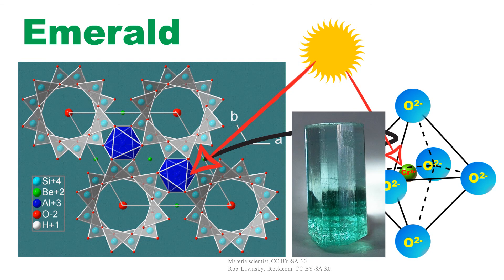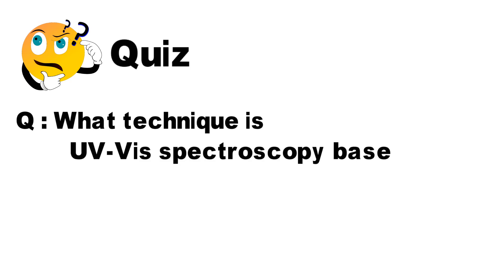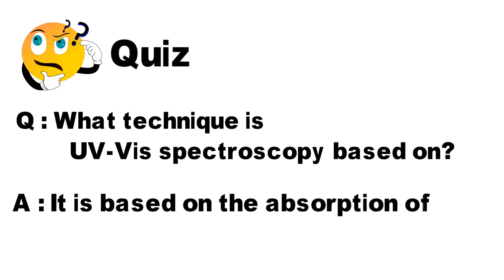Okay, let's review the quiz. Question: What technique is UV visible spectroscopy based on? Answer: It is based on the absorption of light.